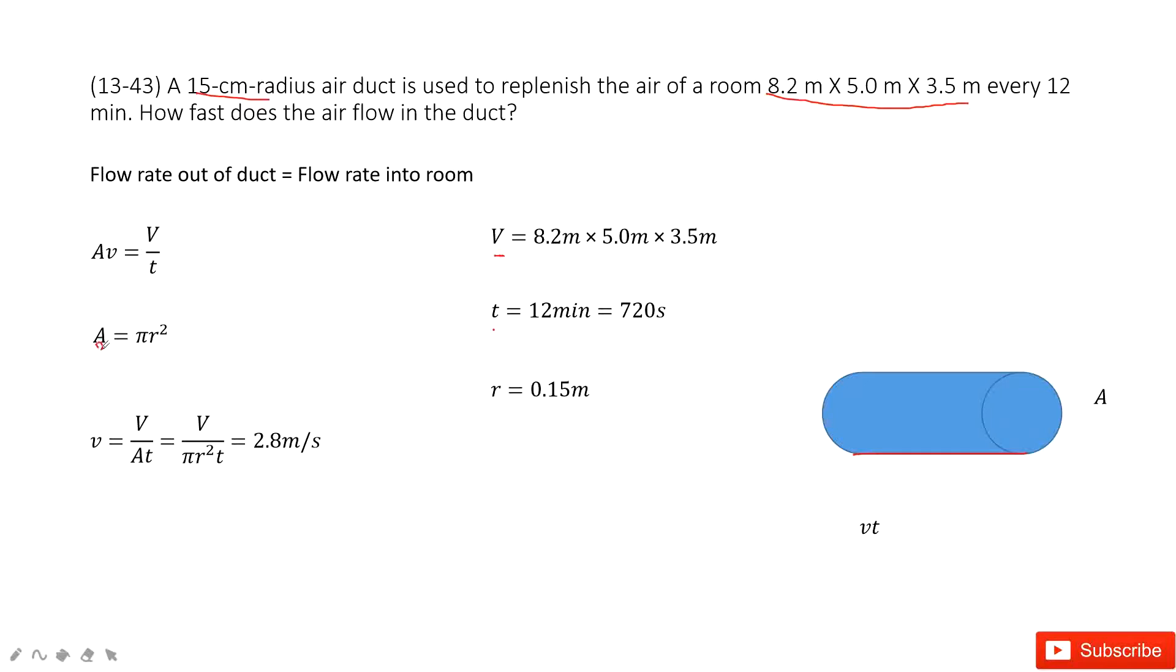Now look at the cross-sectional area. A is pi R squared. This R radius is given at 0.15 meters.